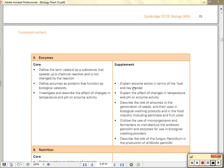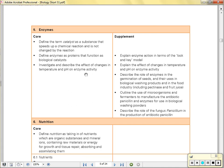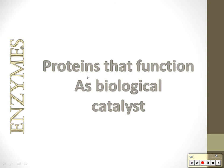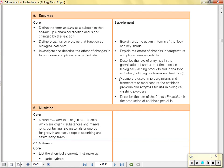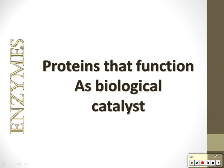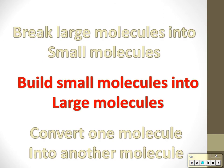On to enzymes. An enzyme is a protein that functions as a biological catalyst. A catalyst is a substance that speeds up a chemical reaction — a catalyst is an instigator. Enzymes have the ability to do three things: they either break large molecules into smaller ones, build things up, or change things.